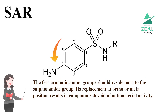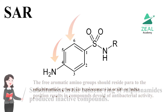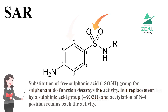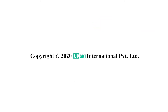The free aromatic amino group should reside para to the sulfonamide group; its replacement at ortho or meta position results in compounds devoid of antibacterial activity. Substitutions in the benzene ring of sulfonamides produce inactive compounds. Substitution of the free sulfonic acid (SO₃H) group for the sulfonamide function destroys the activity, but replacement by the sulfinic acid group (SO₂H) and acetylation of the N4 position retains the activity.